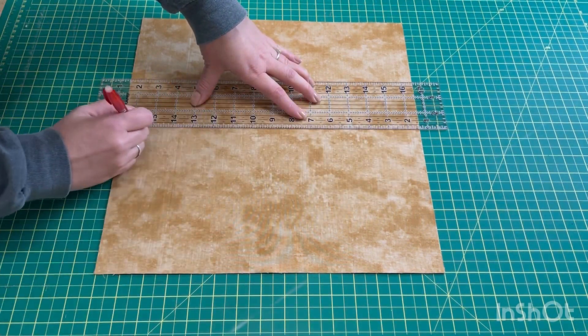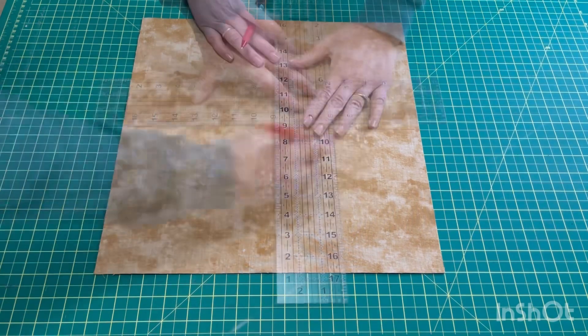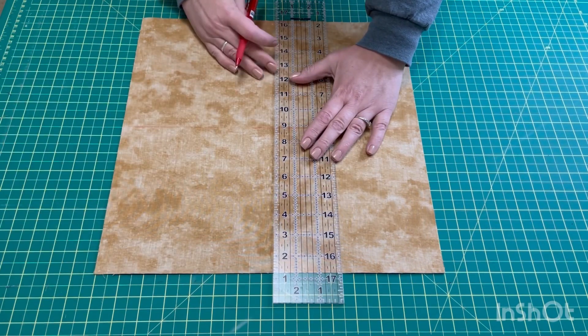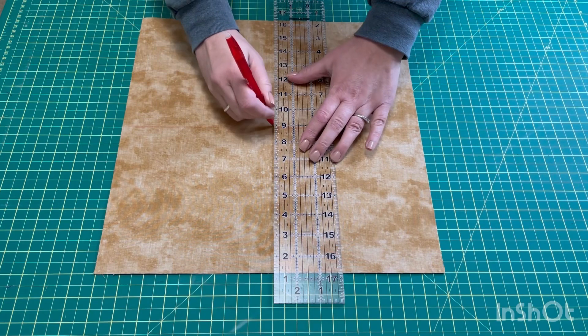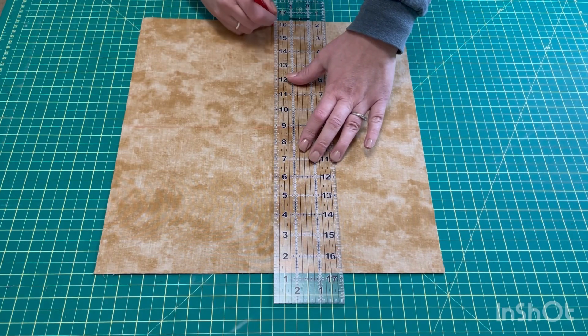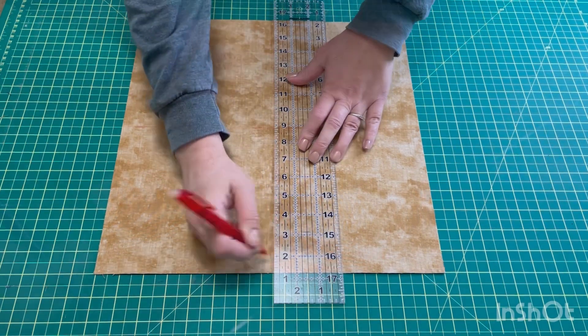This is a great method if you need a lot of half square triangles that are all the same colors. I could try to figure out how to do this scrappy, which I probably will. If you have a lot of half square triangles that you need for a project, this is a quick and easy way to do it.